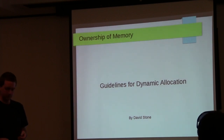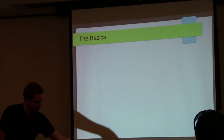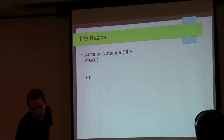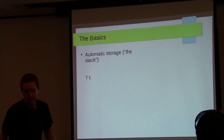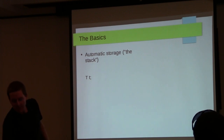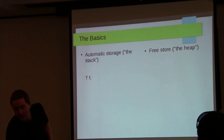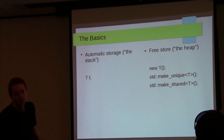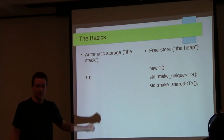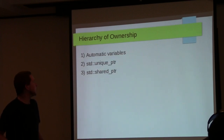The basics: there are two ways you can allocate memory in general. Automatic storage — allocating from the stack — looks like just declaring a type name and a variable. Or from the free store, the heap. There's also global and static allocation but I won't be talking about those. The three general ways you would allocate memory from the heap are: new T, std::make_unique, or std::make_shared.